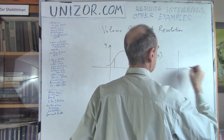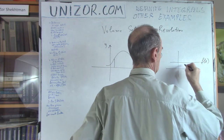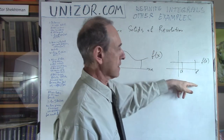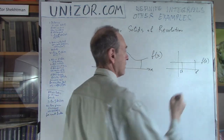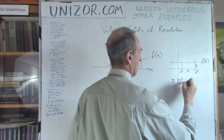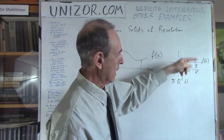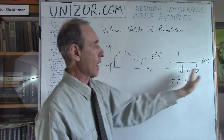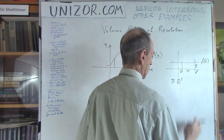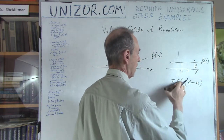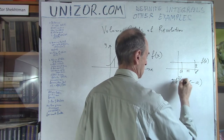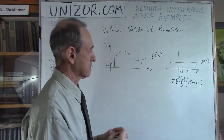Let me give a simple example. If you have a straight line as f(x) from A to B and you revolve it around the x-axis, you will have a cylinder. The radius of the cylinder is f and the height is b minus a, so the volume equals pi r squared h — which is pi times f squared times (b minus a). For a slightly different case: a straight line between A and B that goes from one height to another, revolving around the x-axis gives you a truncated cone.